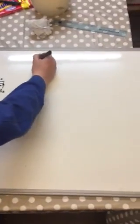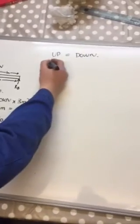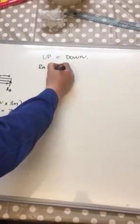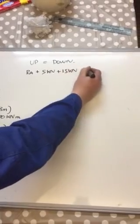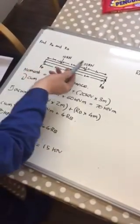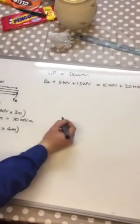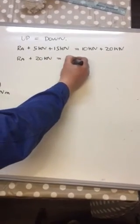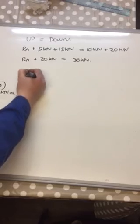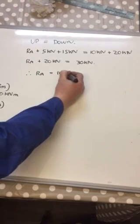So the upward vertical forces is Ra plus 5kN plus Rb, but we know that Rb is 15kN, and that is equal to the downward force which is 10kN plus 20kN. This then becomes Ra plus 20kN is equal to 30kN. Therefore we can transpose, so Ra is equal to 10kN.